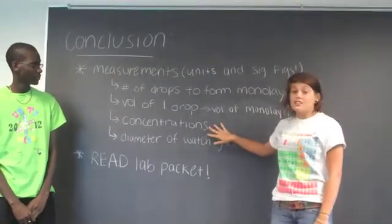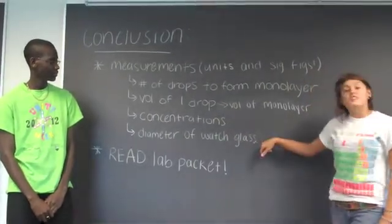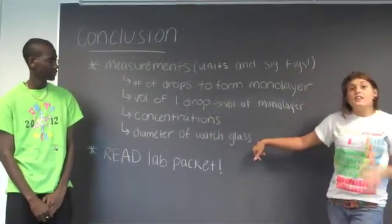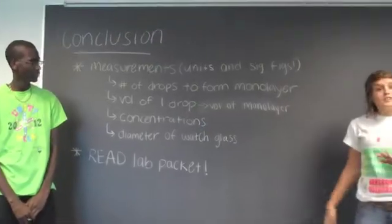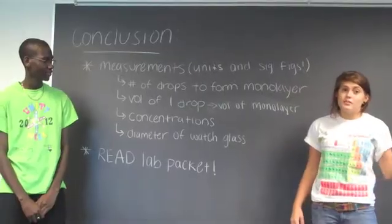Third is the concentrations of the chemicals, which can be found on the bottles. And fourth, the diameter of the watch glass. Now with all of these measurements, you need to make sure that you have the proper units and significant figures because they're going to change experiment to experiment.